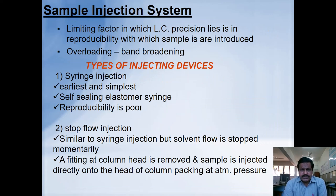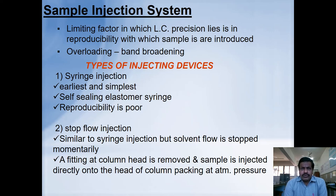The next component is the sample injection system. One limiting factor in liquid chromatography is the reproducibility with which samples are introduced. A troubleshooting issue is overloading, which occurs when a sample is injected before the previous sample has eluted, causing sample accumulation in the column and band broadening. Different types of injection devices include syringe injection, which is the earliest and simplest technique, though reproducibility is poor.